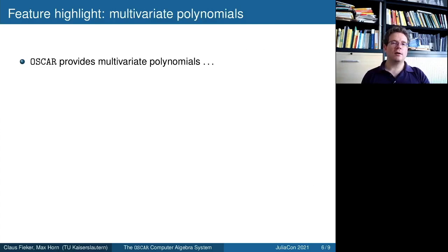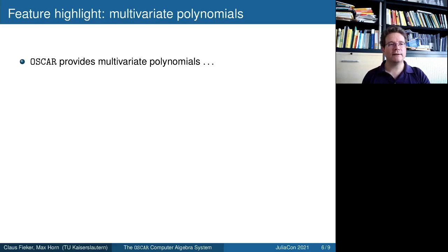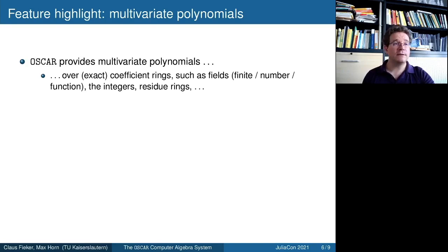To pick one feature to talk about, let's look at multivariate polynomials — that's relatively basic, but I'm pretty sure most people listening will be familiar with these. OSCAR provides multivariate polynomials, as do other packages in Julia. But OSCAR is relatively old, so it predates many of these other implementations. Many of them deal with polynomials with floating point coefficients, but our polynomials really are over exact coefficient rings — not just, we also have inexact coefficient rings, but mostly exact coefficient rings of interest.